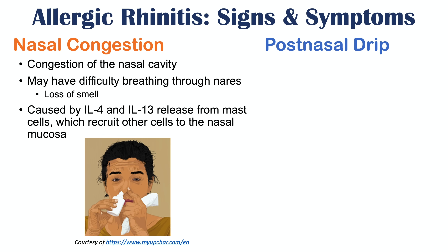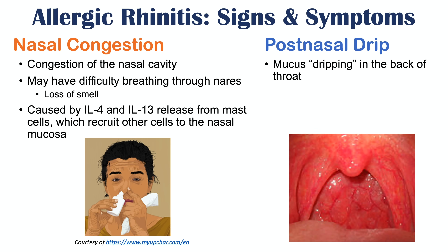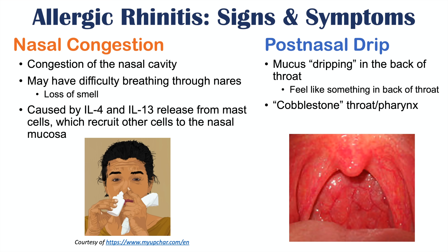We can also see post-nasal drip, which is the sensation of mucus dripping in the back of the throat. With so much mucus being produced, it can drip into the back of the throat, and patients may feel like there's something they need to clear. If you look at the patient's pharynx, we see cobblestoning — little bumps in the throat due to local edema from the post-nasal drip. This cobblestoning is a classic sign of post-nasal drip.